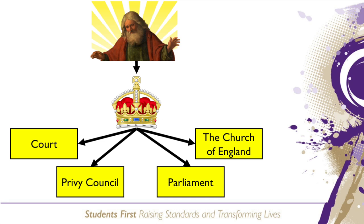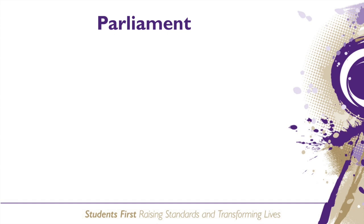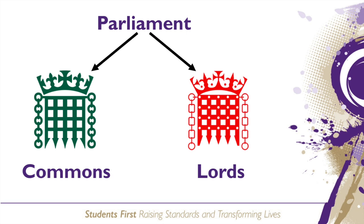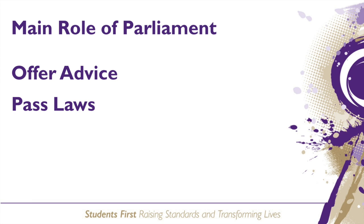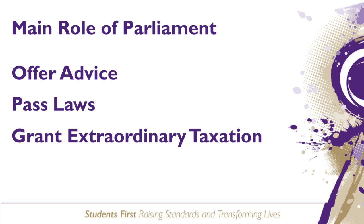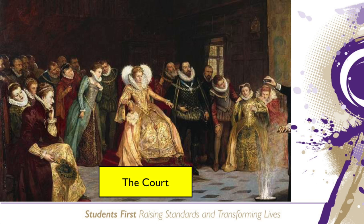Looking at Parliament, it was made up of two chambers: the House of Commons and the House of Lords. As we have previously mentioned, it was called into session by the monarch when required, and it did not sit permanently. Their main role was to offer advice, pass laws which became Acts of Parliament, and to grant extraordinary taxation — these were taxes placed upon people for things like wars with foreign countries.